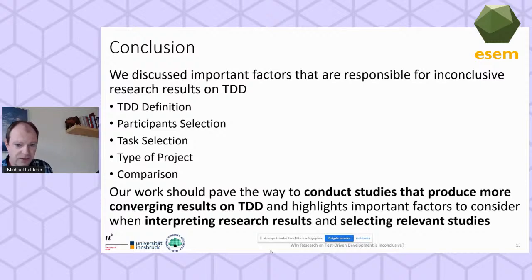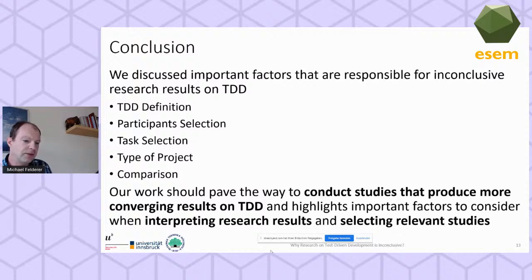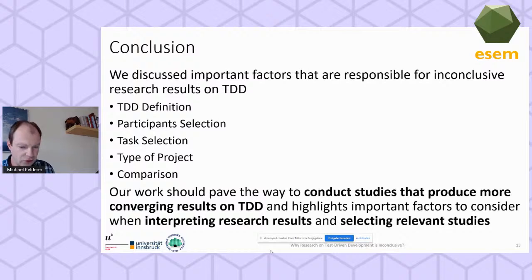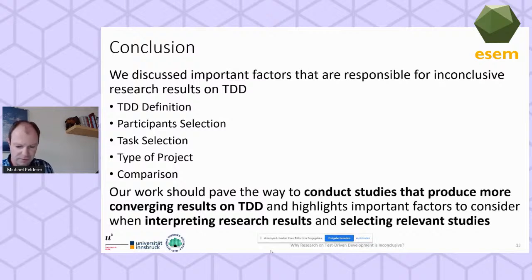In summary, we discussed five important factors responsible for inconclusiveness in TDD research: the applied definition of TDD, participant selection, task selection, the type of project, and the comparison approach. Our work should pave the way to conduct studies with more converging results, and highlight factors important to consider when interpreting TDD research — especially if, for example, you are working in a brownfield setting.